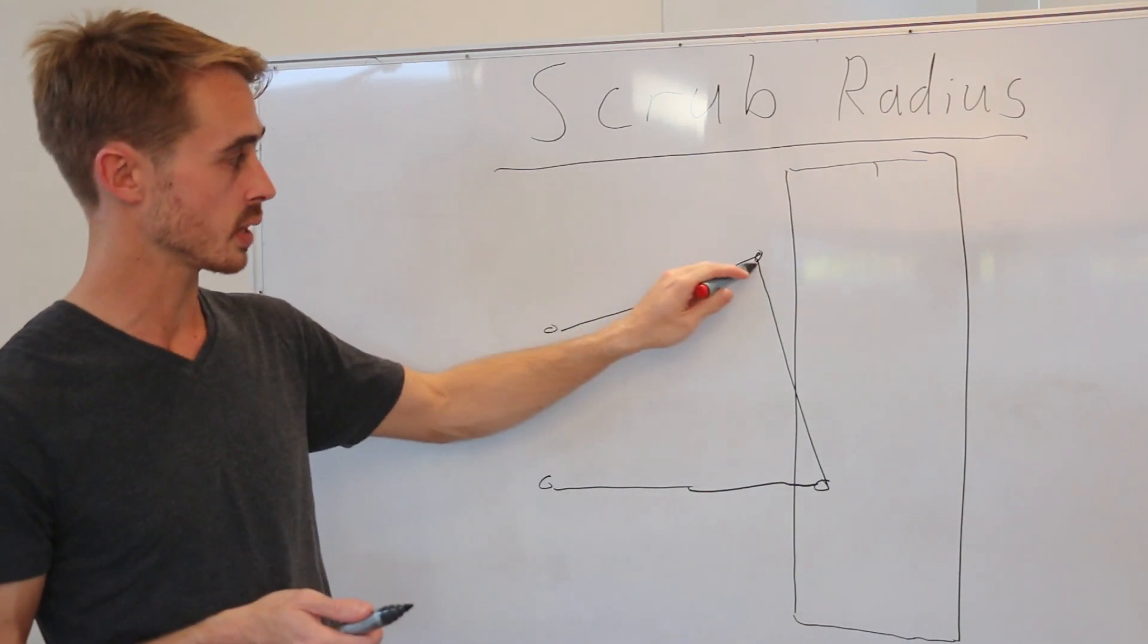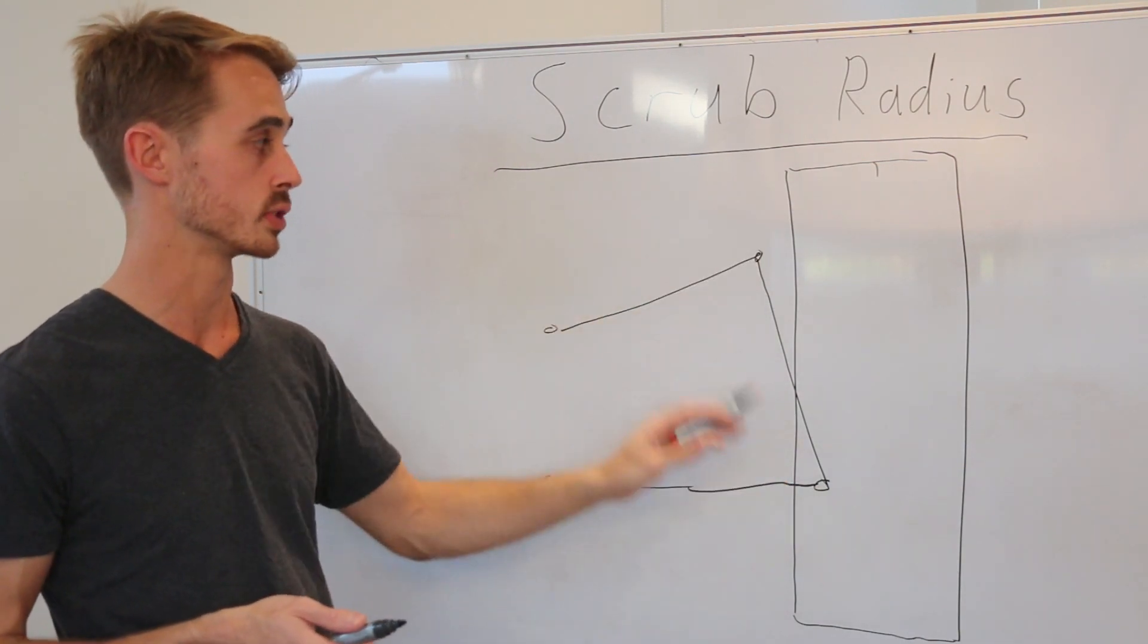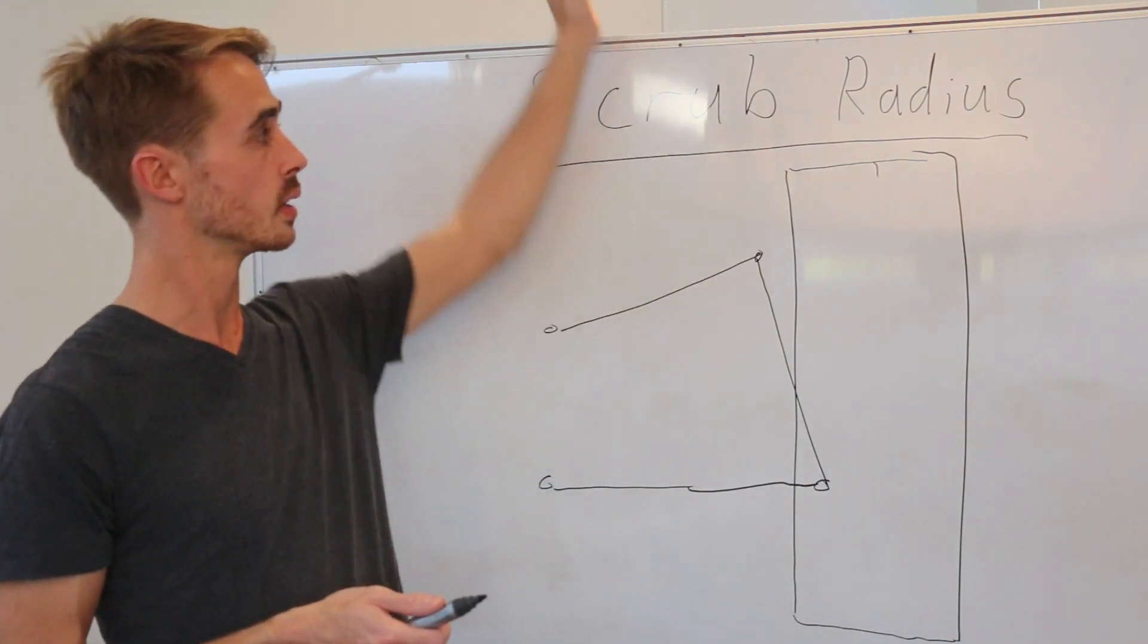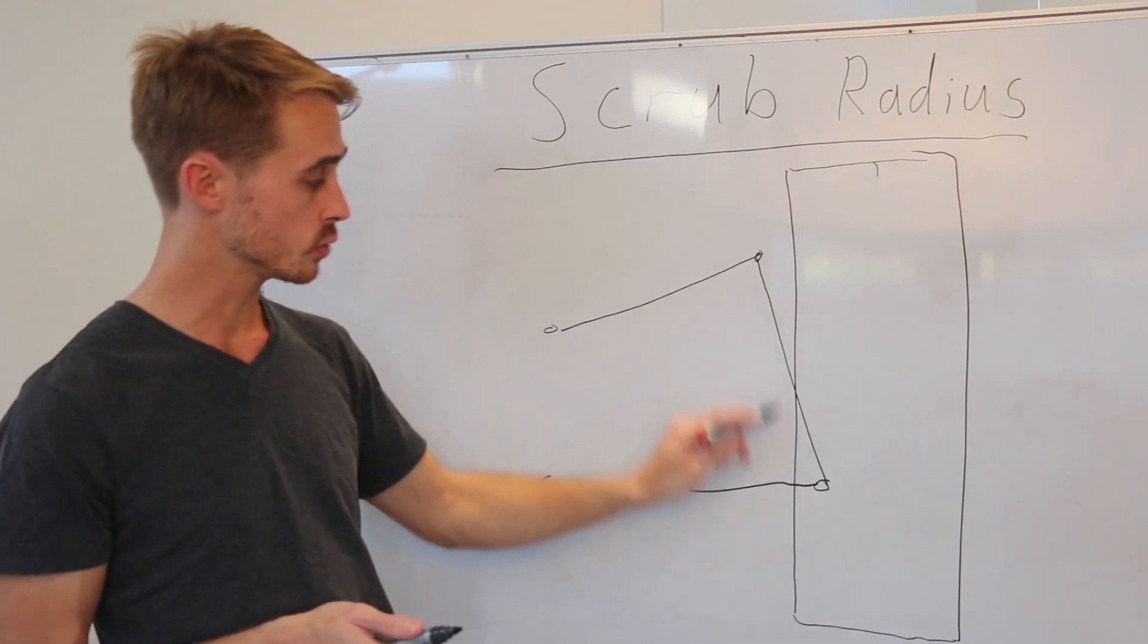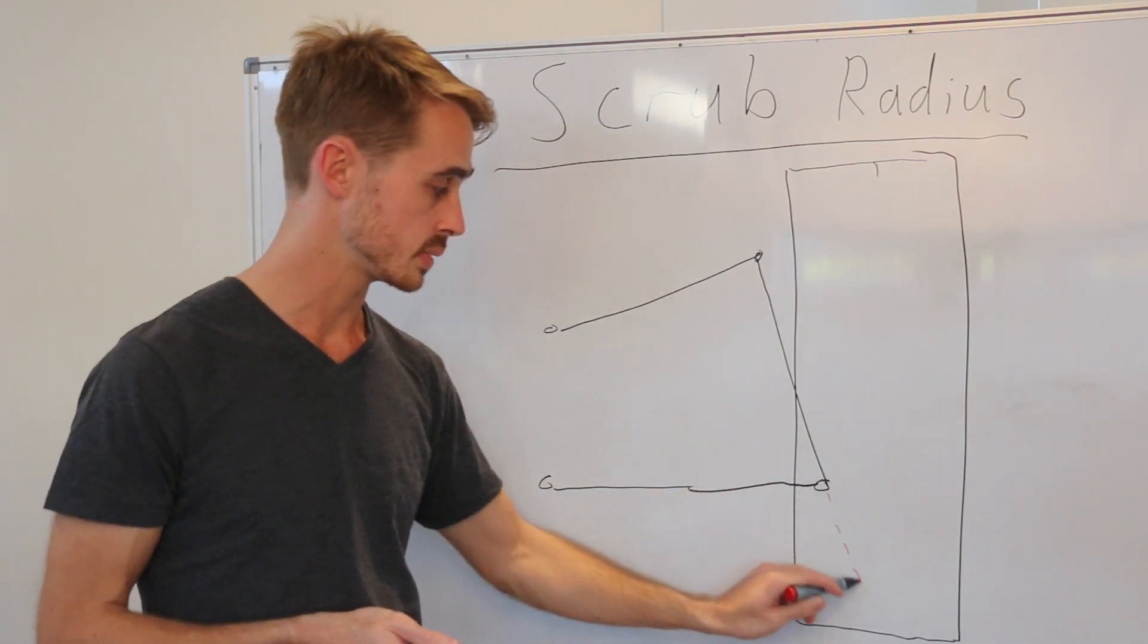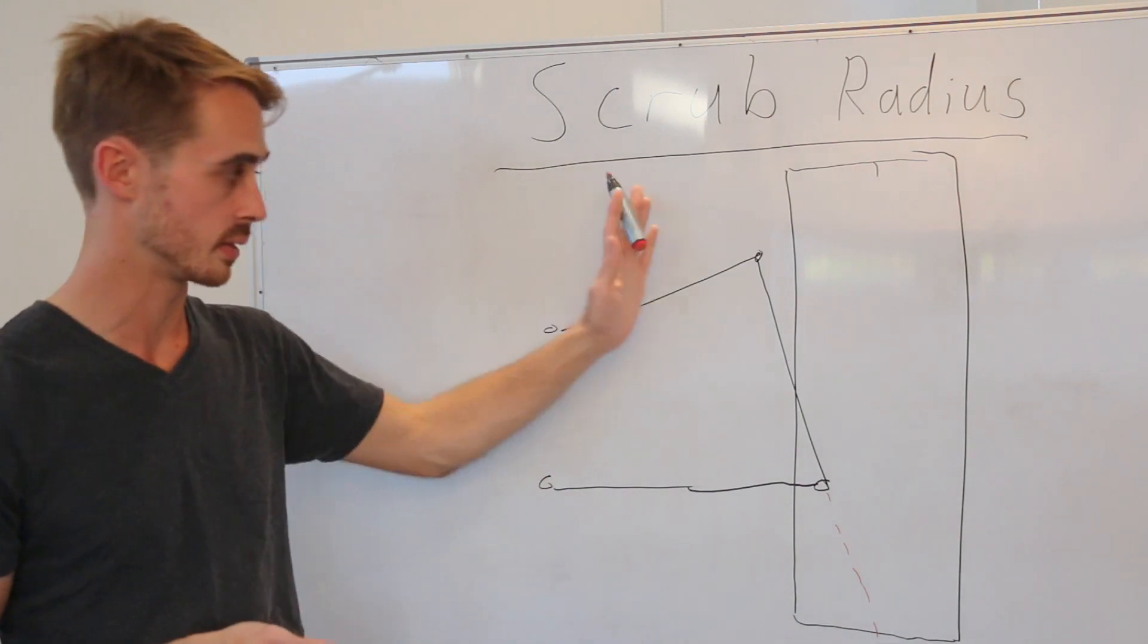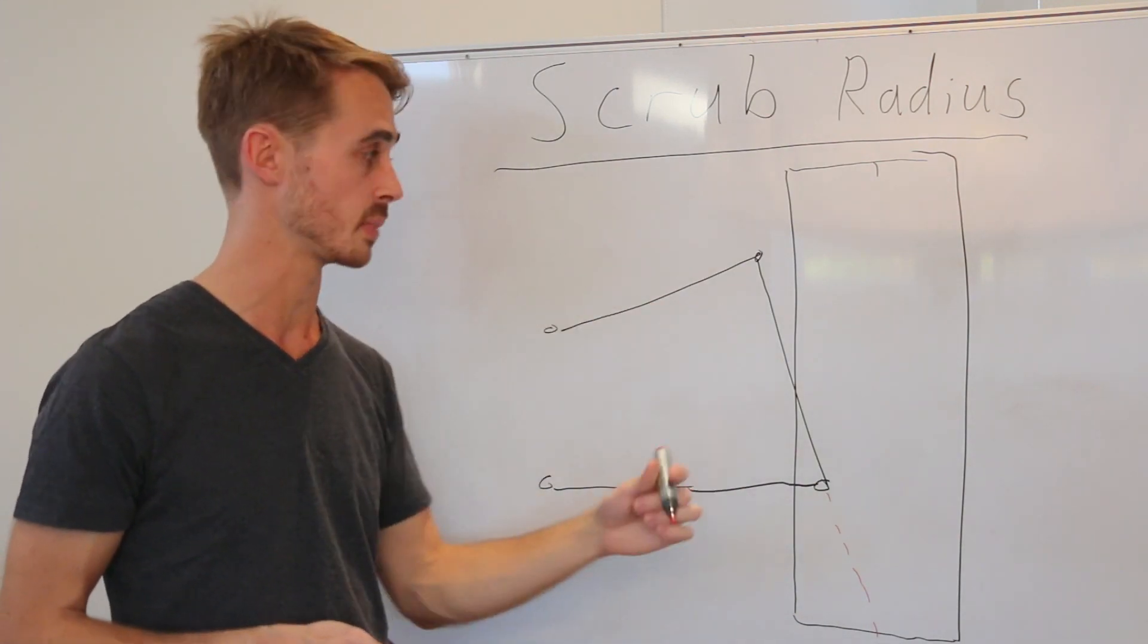If we imagine a straight line between the two suspension pick up points, or if it's a McPherson strut, the upper strut housing and the lower pick up point, and we draw a line down at the kingpin inclination angle which is covered in my other video.